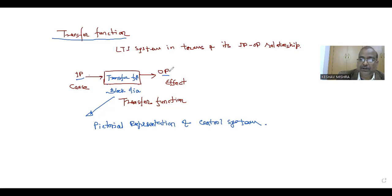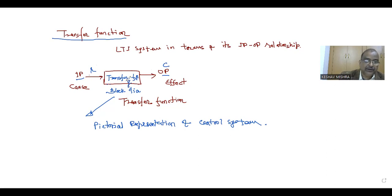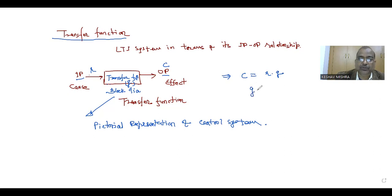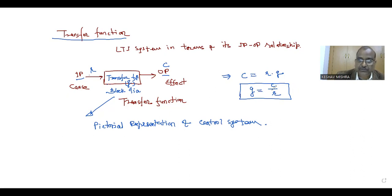These three quantities — input, output, and transfer function — are related to each other. Suppose input is R, output is C, and the transfer function is represented by Z. Then output C is R multiplied by Z, or Z equals C divided by R. This is the transfer function: the ratio of the output quantity to the input quantity.